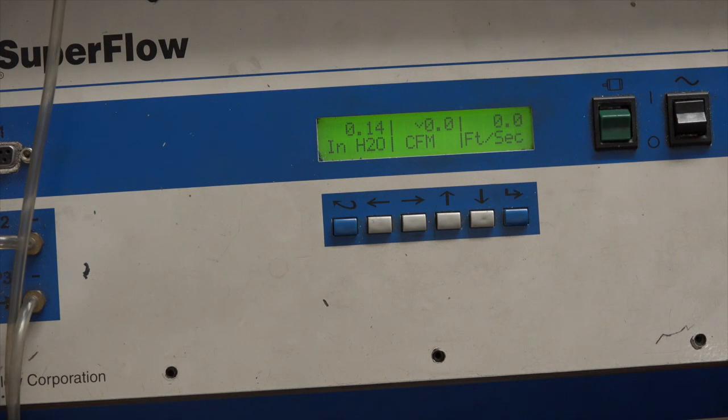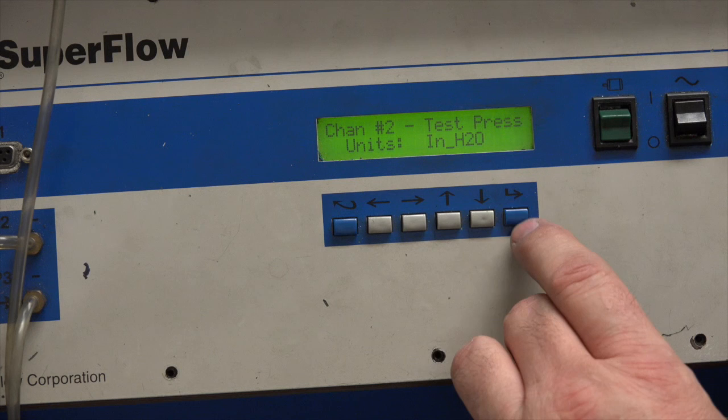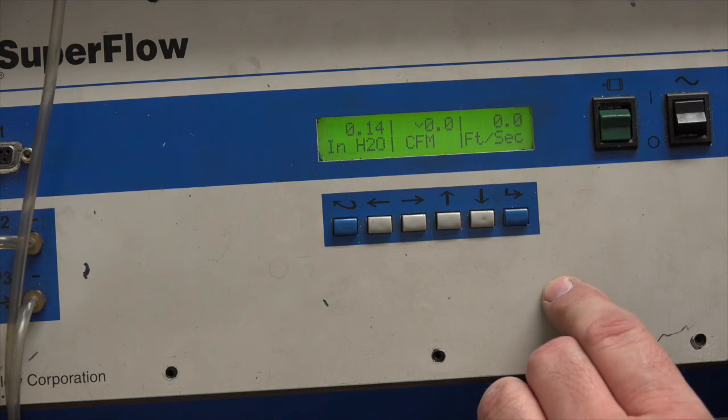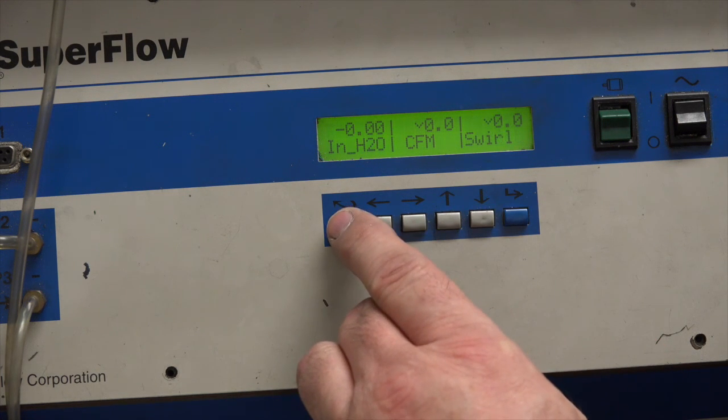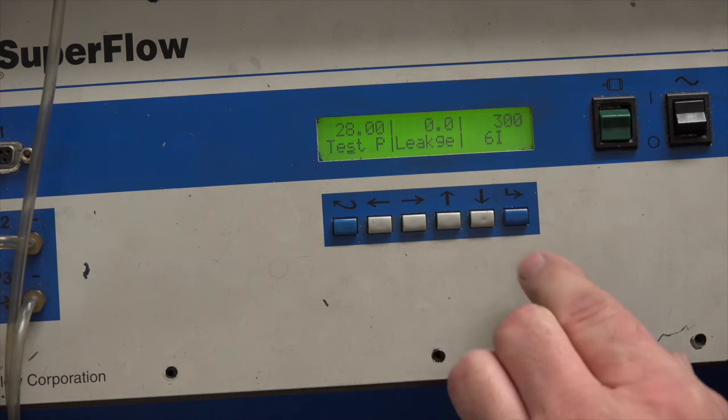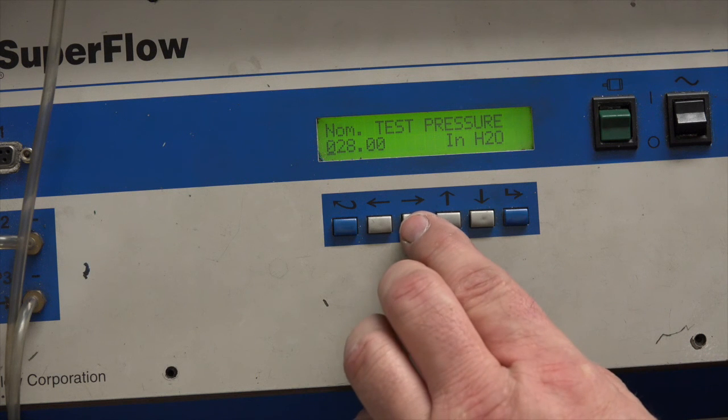We turned the machine on using the AC wavy mark there. And right now we need to change a few of the settings. We need to look at CFM. We also need to set up the inches of water. We're not going to run 28 inches of water like you might do when you're flowing your valves and your head.